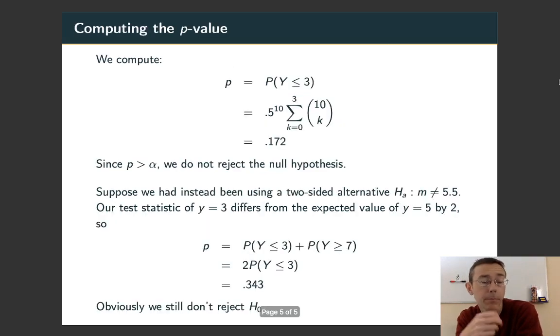Let's compute it. So p equals P(Y ≤ 3), the probability of getting at most 3 values below the median. The second line there, I've actually just computed binomial probabilities. So 0.5 to the 10th, sum k equals 0 to 3, 10 choose k. And when you compute that either by hand or preferably using technology, you get 0.172.